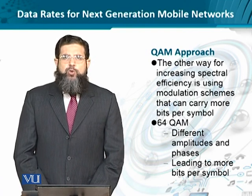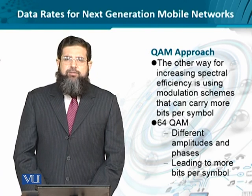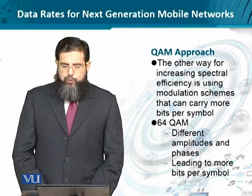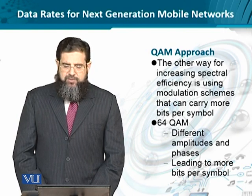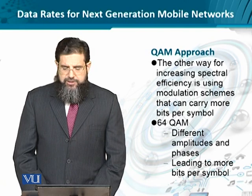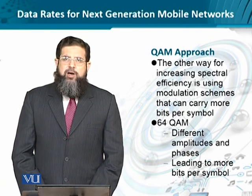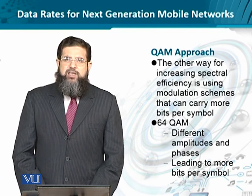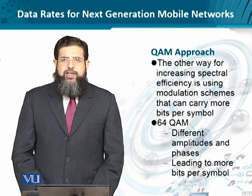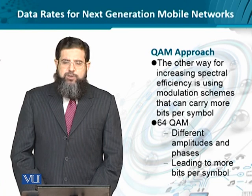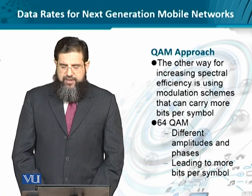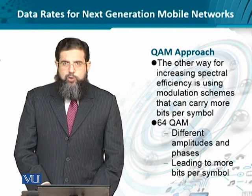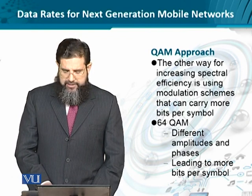Another approach is better utilization of the wavelength or the baud, realized through Quadrature Amplitude Modulation, or QAM. QAM uses an advanced modulation scheme that carries more number of bits per baud or symbol. It works by using different amplitudes and different phases to represent more than one bit onto a single symbol, allowing a symbol to be utilized more efficiently in terms of bits. A well-known example is 64 QAM, though it can also be 256 QAM or 16 QAM.